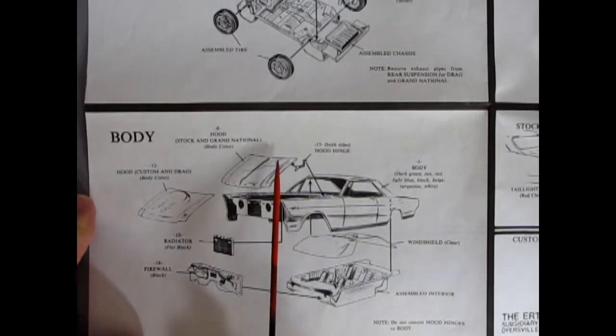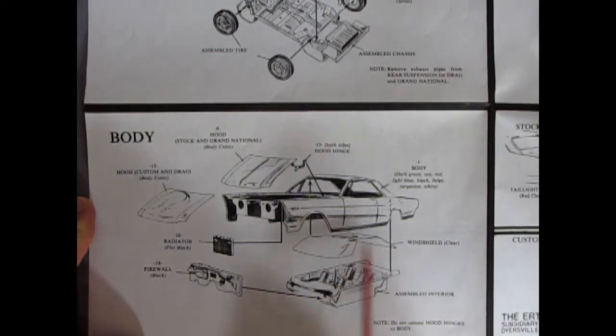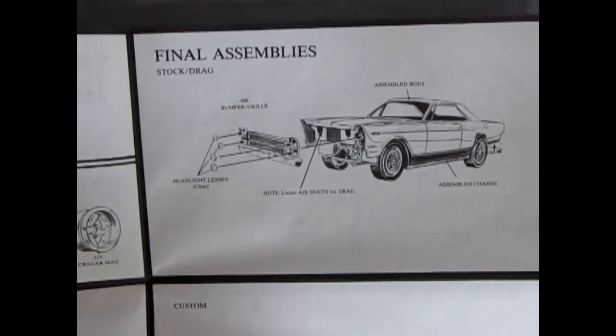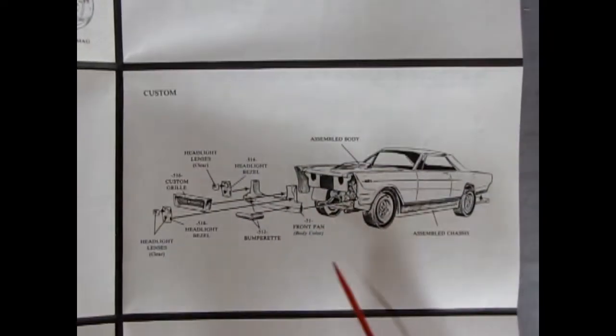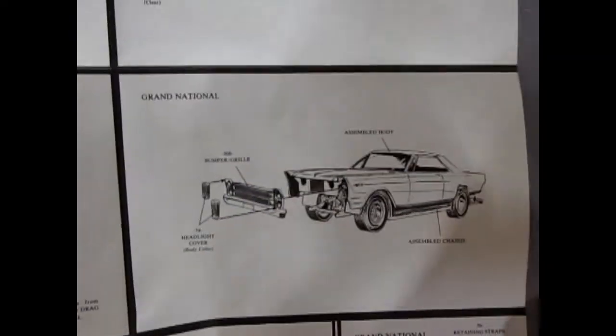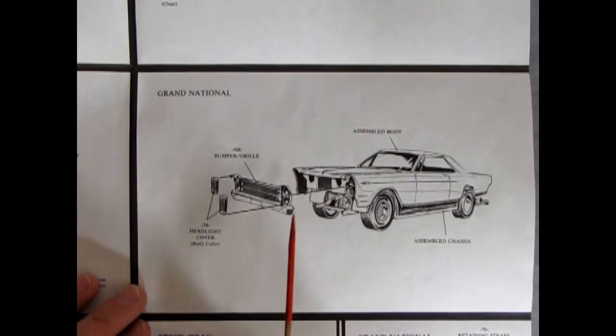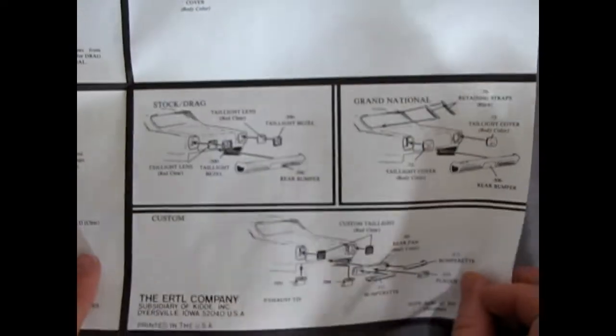We have the body going together. They give you your stock or NASCAR style hood, and then the custom and drag one with that teardrop shape like the Ford Thunderbolt. Your interior tub, your front and rear windshield with bars in between, your firewall and radiator. The custom one has the nice George Barris Chrysler 300 style grille. Then we've got our Grand National NASCAR style - you cover up your headlights with big covers much like they did in real racing.